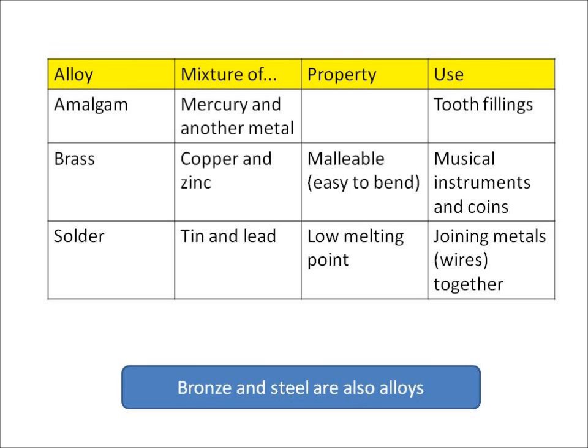Brass is malleable and bendy, so we can use it to make musical instruments. Solder is a mixture of tin and lead that has a low melting point and is also a good conductor of electricity, and that's used for joining metals together.